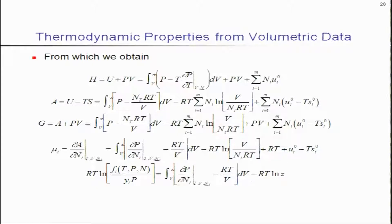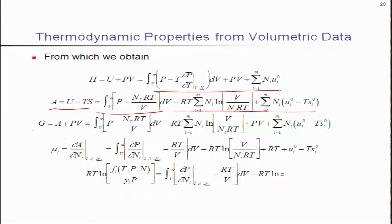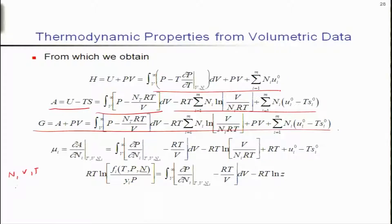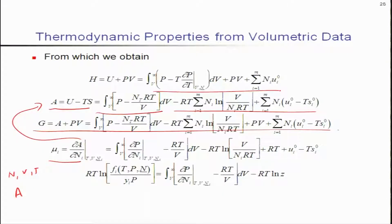If we have information on U and entropy, we can get H easily — it is just this combination. We can also get A (Helmholtz free energy) as U minus TS, and similarly G. Once we have G, we know that for N, V, T as independent variables the corresponding free energy is the Helmholtz free energy A, whereas for N, P, T the corresponding free energy is G. That is why for N, P, T we take the partial derivative of G with respect to N_i, and for N, V, T we take the partial derivative of A with respect to N_i.